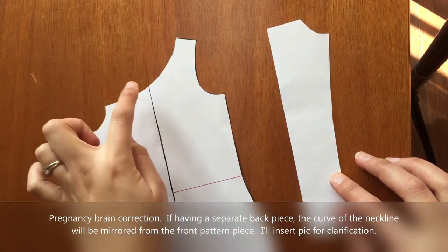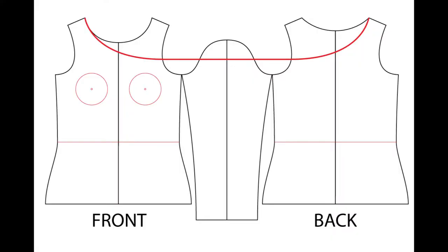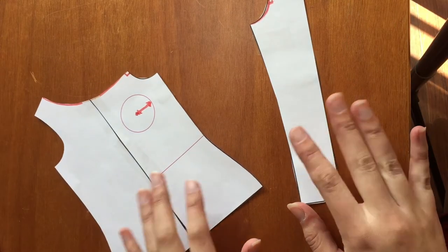You would have a full sleeve, most likely if that was the case, and you'd have the back arms eye connected here. And you would do the same thing, drawing the line down and straight across from the front. And then you'd have your pattern pieces that way.